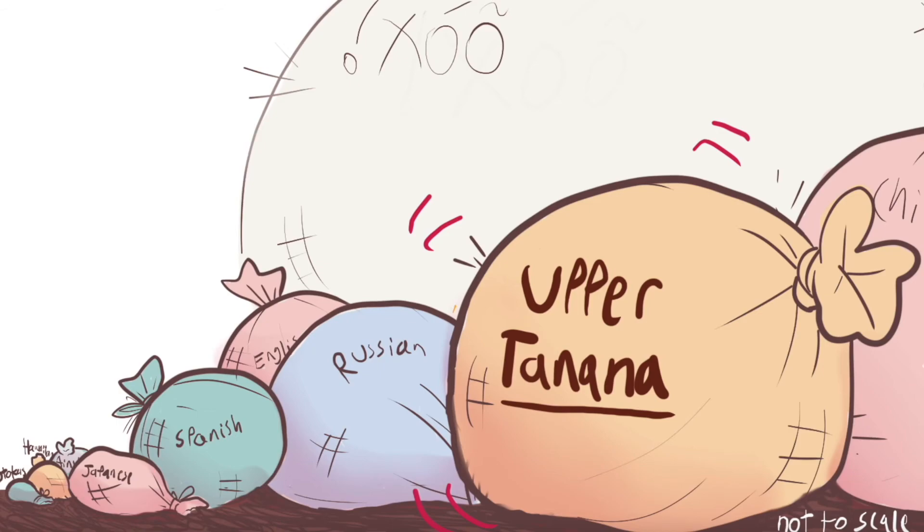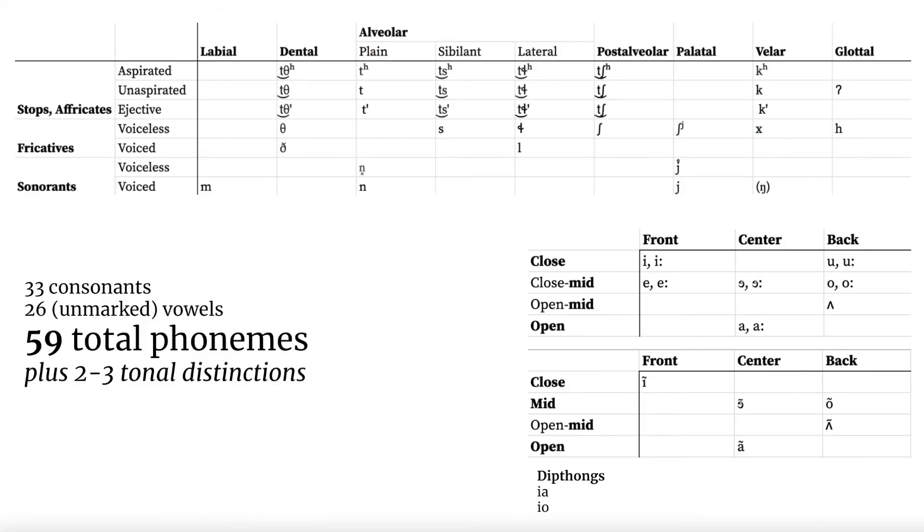It's a truly massive inventory, so it was tough to fit in such a short video, but you can read more. A massive inventory of 59 total phonemes, or 80-something if you include the two-to-three tonal distinctions, and their scant minimal pairs will make more sense in the next two videos about the phonology and morphology of Upper Tanana.